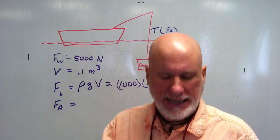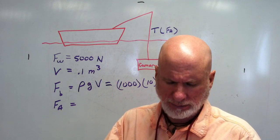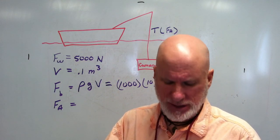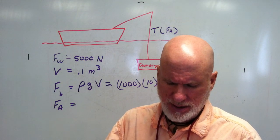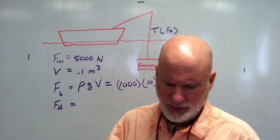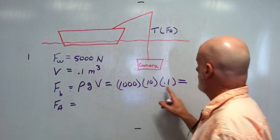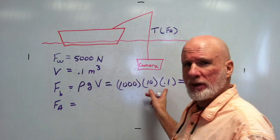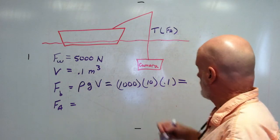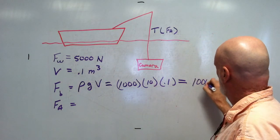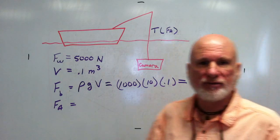Do you really need a calculator? Okay. 1,000 times 10 times 0.1. Okay. Well, you know, 10 times 0.1 is 1, 1 times 1,000, so it's 1,000. That's the buoyant force.